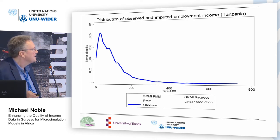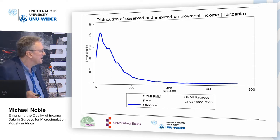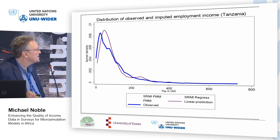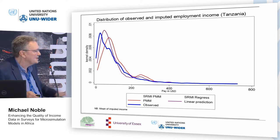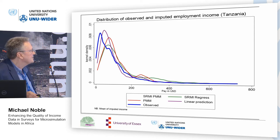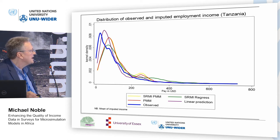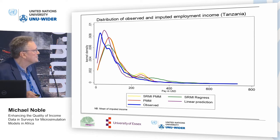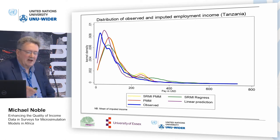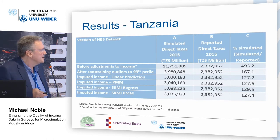What do we find in Tanzania? Looking at a kernel density plot: this is the plot of the observed cases — pay in US dollars for consistency when comparing across countries. Then we have simple linear prediction, PMM, SRMI regress, and SRMI PMM. For the multiple imputations this is a mean of 50 imputations. The SRMI PMM result in yellow is more or less where the non-SRMI version of PMM also goes.